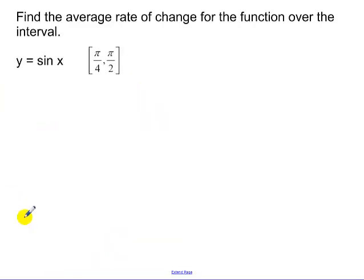Okay, now average rate of change when we're talking about trigonometry. So we find f of pi over 2, the function evaluated at pi over 2, which is 1. f of pi over 4 is root 2 over 2.